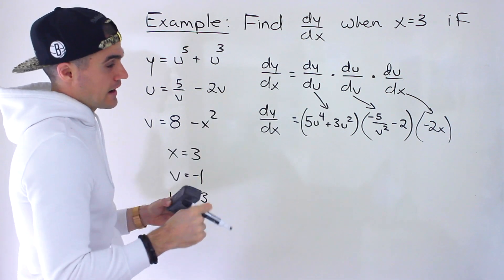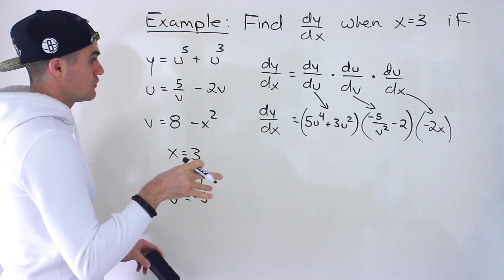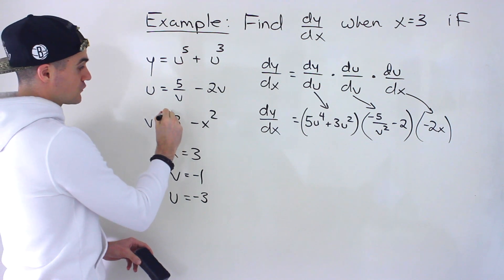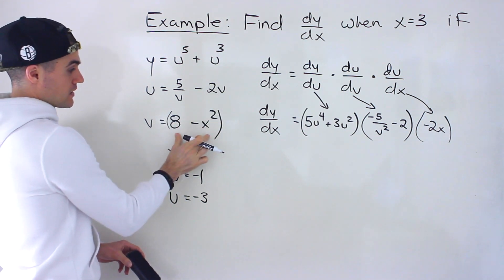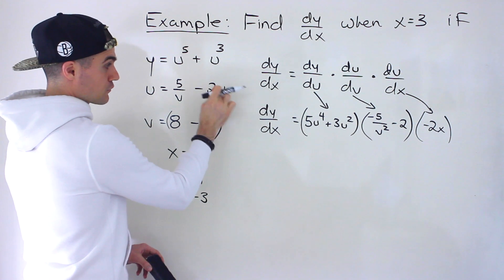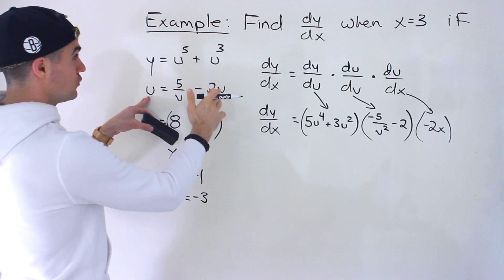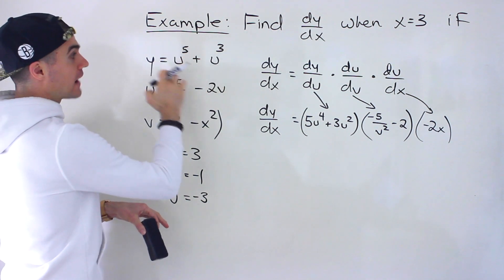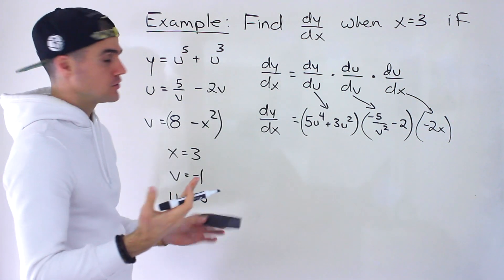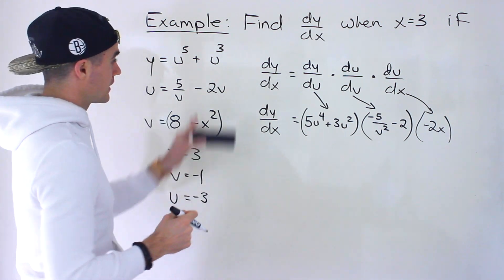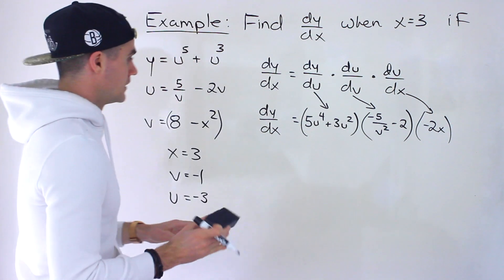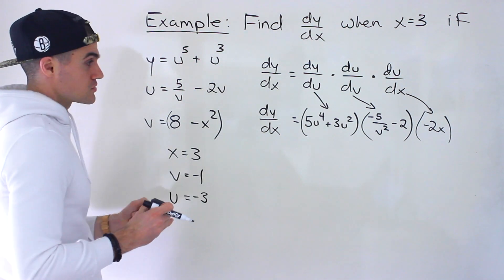Another way to do this — though I don't recommend it — is to write y entirely as a function of x by substituting: plug 8 minus x squared in for v, get the expression for u, then plug that into y, and differentiate with everything in terms of x before substituting x equals 3. I don't recommend creating that big composite function. Deriving all of these separately is better; you're working with different variables, but it's manageable when you know what values to plug in.